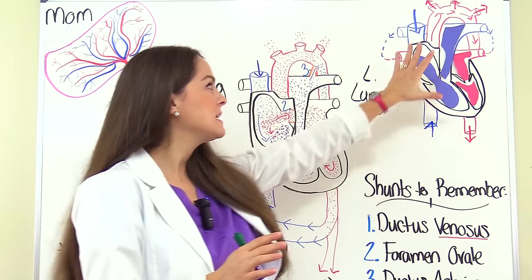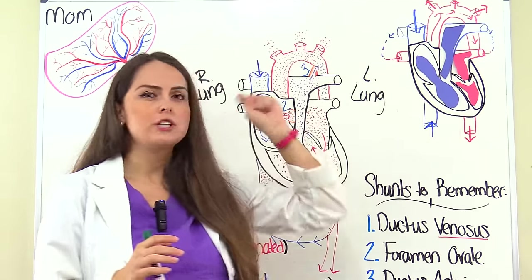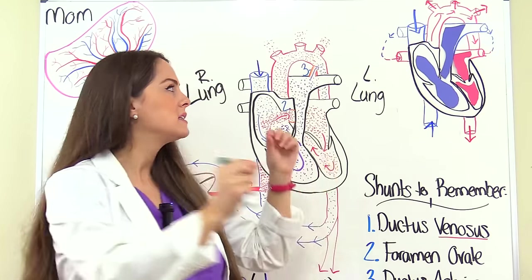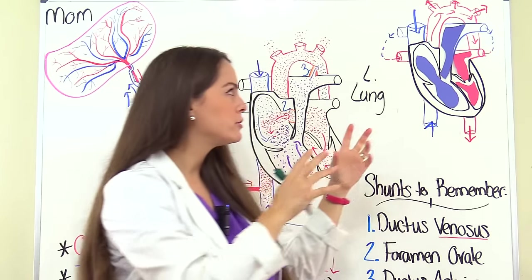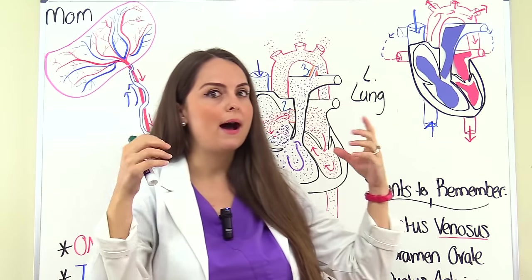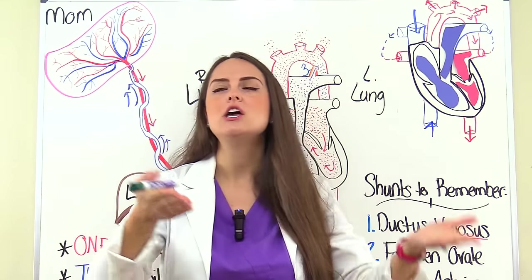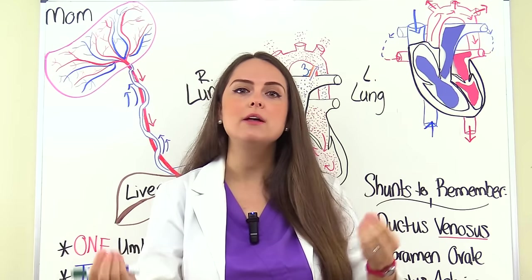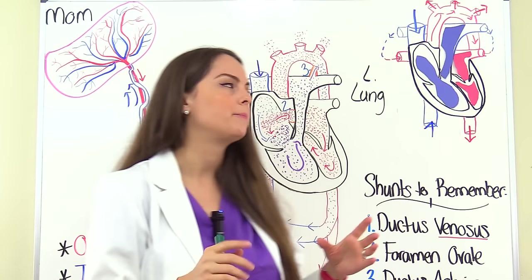The right side takes deoxygenated blood and pumps it to the lungs. The left side takes that oxygenated blood it just received from the lungs and pumps it throughout the body. The heart and the lungs work beautifully together. In this normal heart, there are no shunts or passageways allowing blood to bypass the lungs, because we're using the lungs and gas exchange needs to occur.